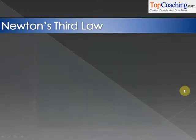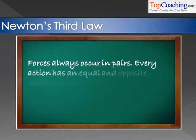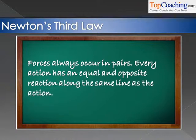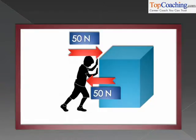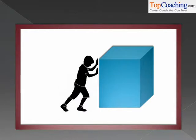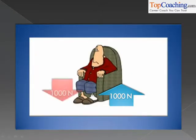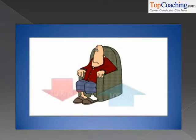Let's look at Newton's Third Law. This one states that forces always occur in pairs. Every action has an equal and opposite reaction along the same line as the action. It basically says that if you apply a force of 50 Newtons on a body, the body will apply a reverse force of 50 Newtons back to you. If you apply a force on the table in front of you, the table will apply a force on your body. Take a look at this man sitting right here. You can see that the man is applying a force of 1000 Newtons on the chair. After all, he is weighing 1000 Newtons. On its part, the chair also applies a force of 1000 Newtons on the man.